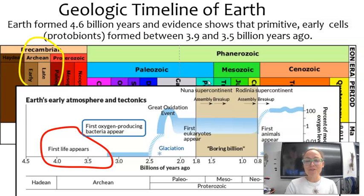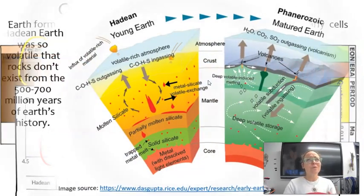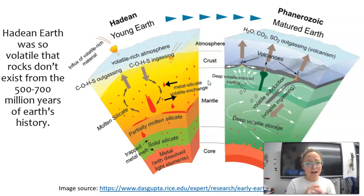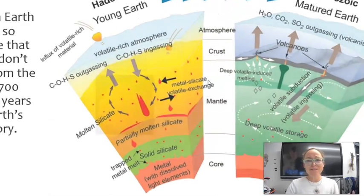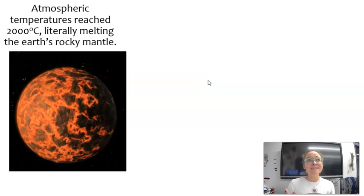Let's talk about the conditions on early Earth. Earth when it was first formed was very hostile and volatile. Scientists actually can't find any rocks from the first 500 to 700 million years of Earth's history because Earth was so hot at some points that it reached 2,000 degrees Celsius, literally melting Earth's rocky mantle.